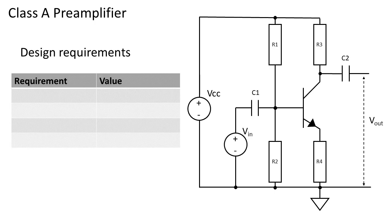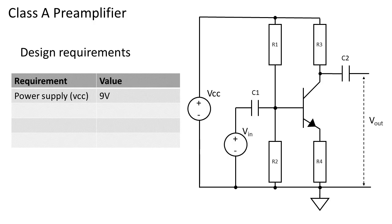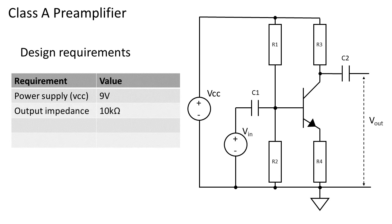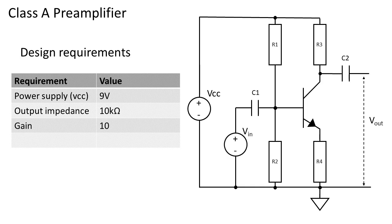Before we start designing we need to note down some design requirements to get started. The first requirement is the power supply voltage. For this example we use 9 volts. The second requirement is the desired output impedance. This will be 10k ohms. The third requirement is what the gain will be of the amplifier. We will choose a gain of 10 times.